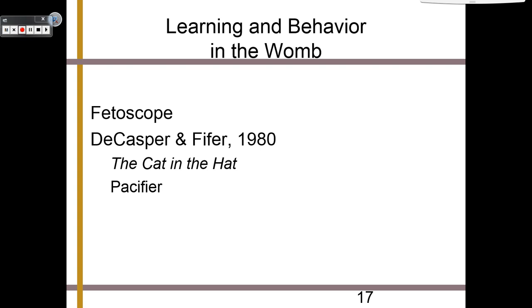When we are learning and studying behavior in the womb, we use something known as a fetoscope. In a famous experiment done in 1980, DeCasper and Pfeiffer would use a fetoscope while mothers read to their unborn children the story The Cat in the Hat. Later, after the children had been born, the same story was read to them again, and researchers would monitor their pacifier movement. What they found was that these children were actually showing signs of recognition — they recognized The Cat in the Hat from when they were still in the womb.